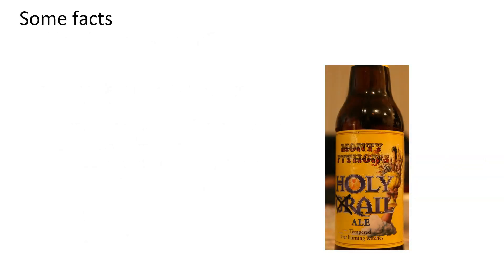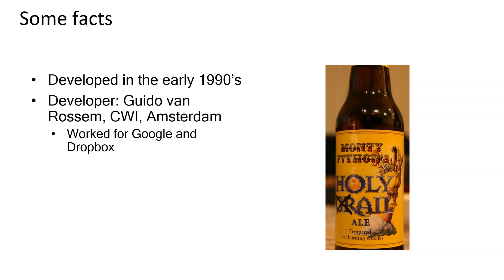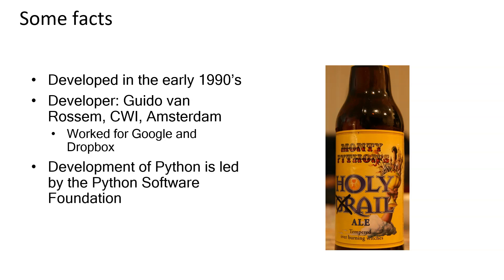For some facts about Python: it was developed in the early 90s and the developer was a Dutch guy called Guido van Rossum, who worked at the mathematics center in Amsterdam and later worked for Google and Dropbox. Now he's retired. The development of Python is led by the Python Software Foundation. Python is actually named after Monty Python because Guido van Rossum was a fan of Monty Python's Flying Circus — check YouTube for some videos and you'll have a lot of fun.